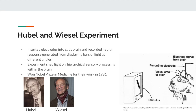Before getting into the Gaussian tuning curve, I want to discuss the Hubel and Wiesel experiment, a seminal experiment in computational neuroscience. They inserted an electrode into a cat's brain, specifically in the V1 area of the visual cortex, and this electrode could record electrical signals — any action potential or spike. Their goal was to figure out what kind of visual stimulus caused a specific neuron to start firing.